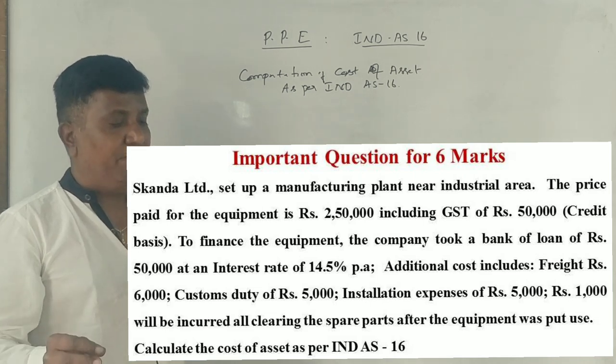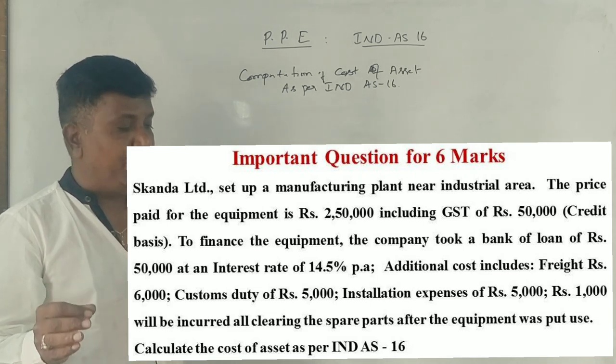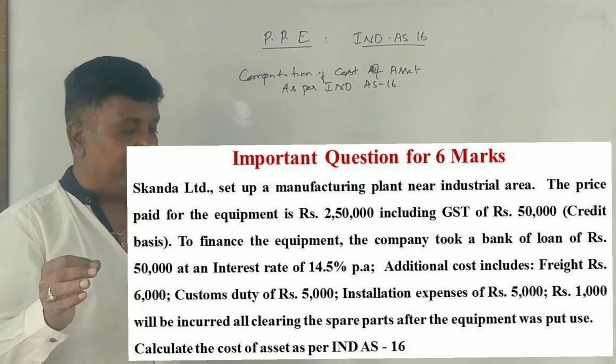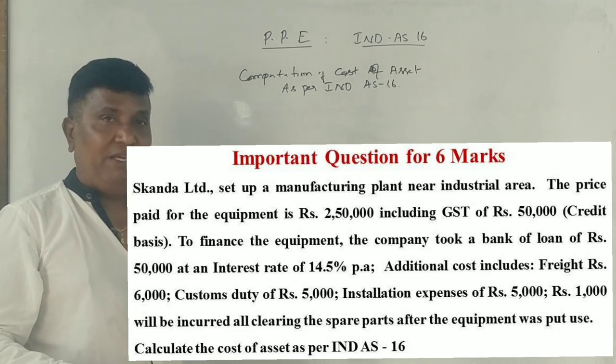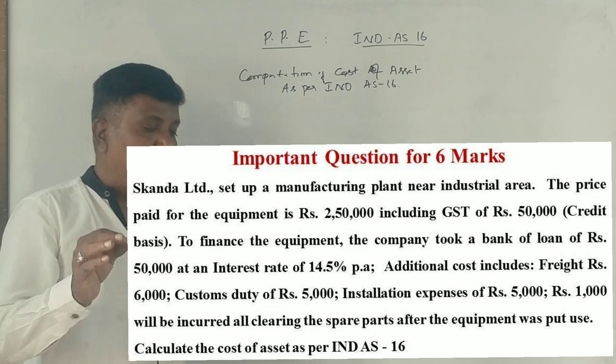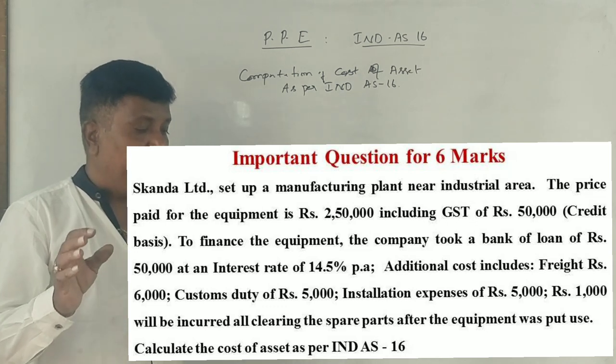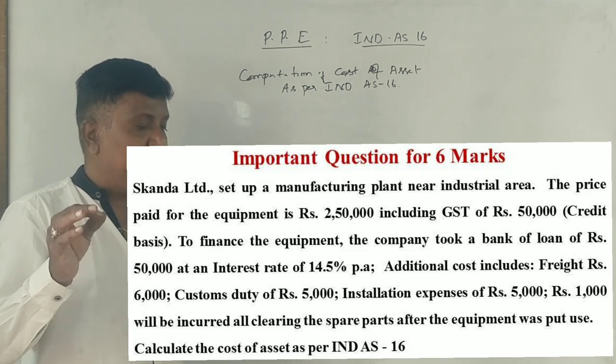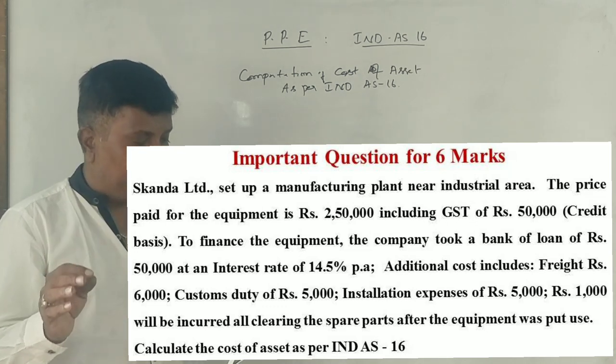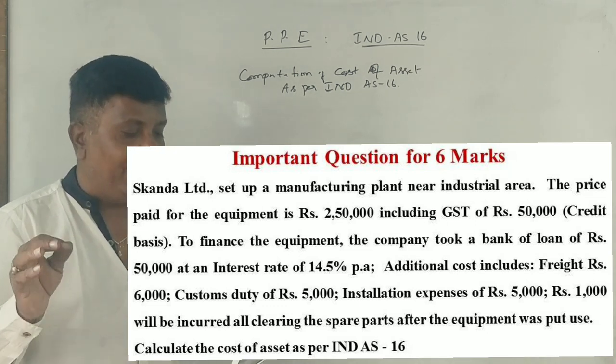Skandal Limited set up a manufacturing plant near an industrial area. The price paid for the equipment is Rs. 250,000, including VAT.